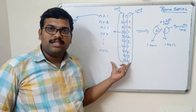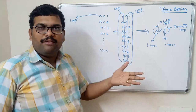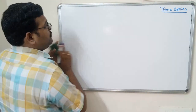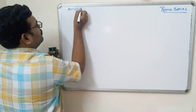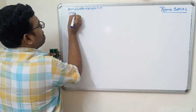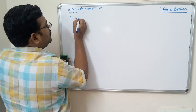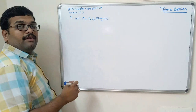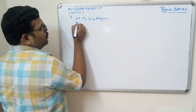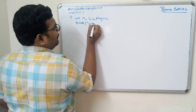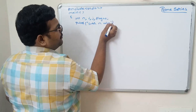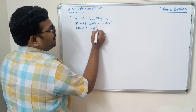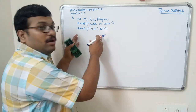Hope you understood this concept. Let us write the program and trace it so that any doubts will be cleared. We write the header file, the main function, declare variables: n, i for the outer loop, j for the inner loop, and a flag variable. Then we read the n value using scanf with the integer format specifier.